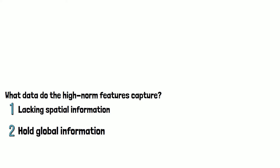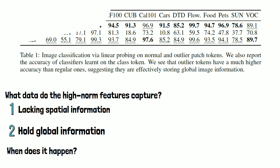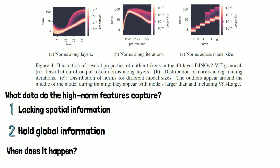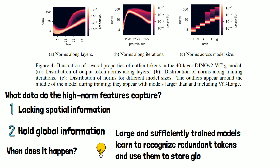This can be seen in a table showing image classification results using embeddings from DINOv2. The class token — added to the input sequence to capture global information — gives the best results. But high-norm outlier tokens achieve better results than regular tokens. Regarding when high-norm tokens appear: they are more common in the middle to last layers of the model, they start appearing after training for a while and not at the beginning, and they only appear in larger models. So large and sufficiently trained models learn to recognize redundant tokens and use them to store global information — which is a very interesting observation by itself.